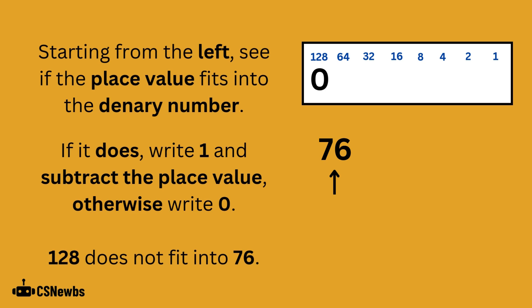Starting from the left, see if the place value fits into the denary number. If it does, write 1 and subtract the place value, otherwise write 0. 128 does not fit into 76, so 0 has been written below the 128 place value.